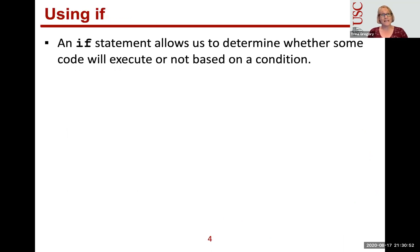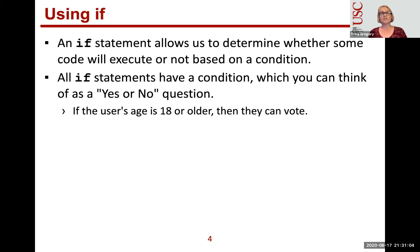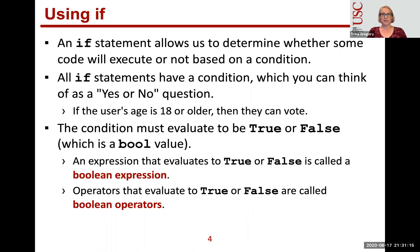Let's start with the `if`. `if` is a reserved word in Python. It allows us to execute some code based on a condition — specifically, if that condition is true. It's almost like asking a yes-or-no question: if the user's age is 18 or older, then they can vote. The computer evaluates the condition to true or false, which is a bool type. An expression that evaluates to true or false is called a Boolean expression, and operators that evaluate to true or false are called Boolean operators.